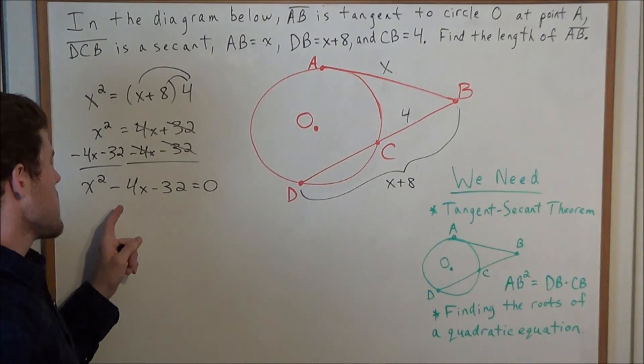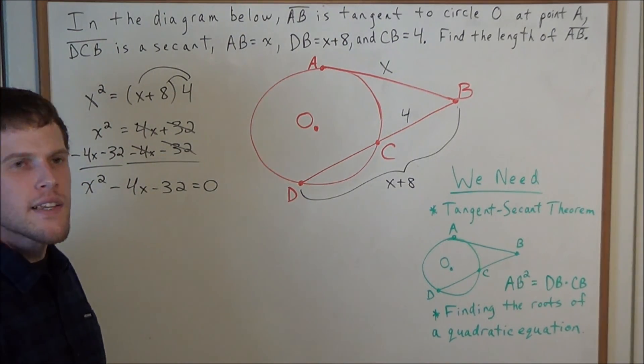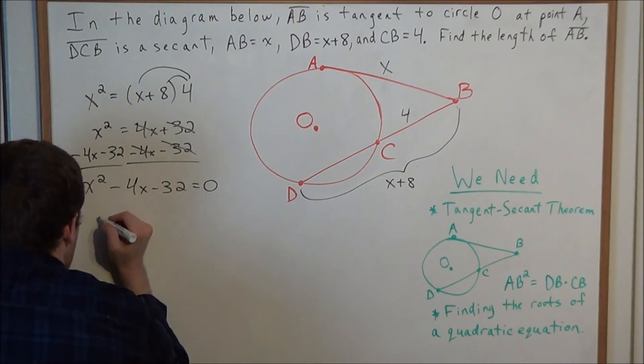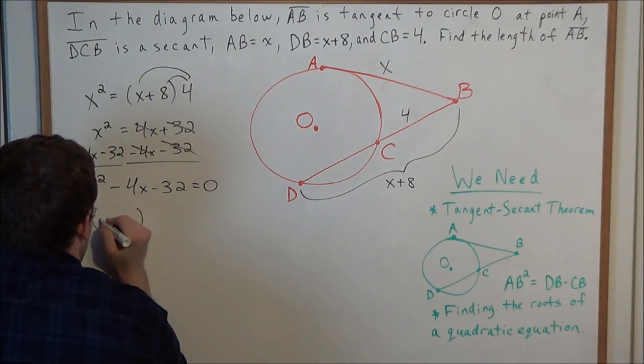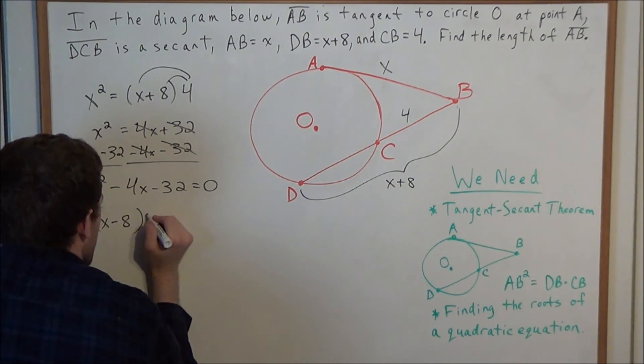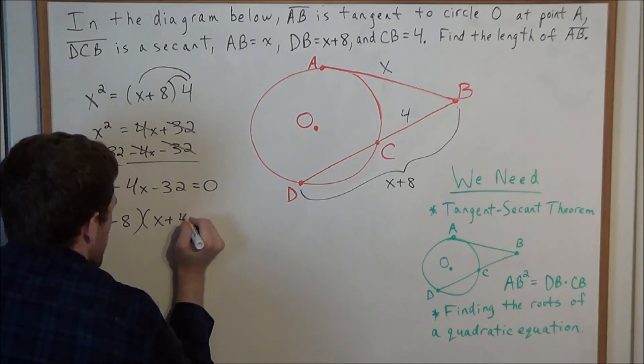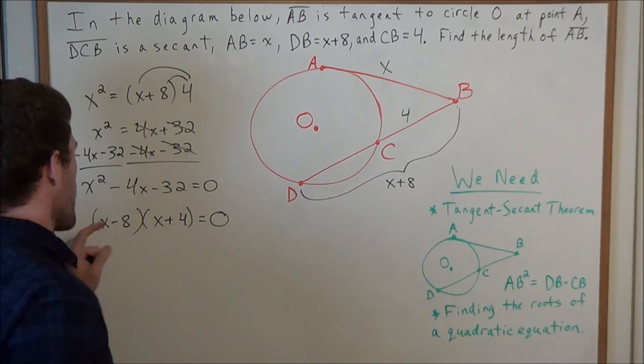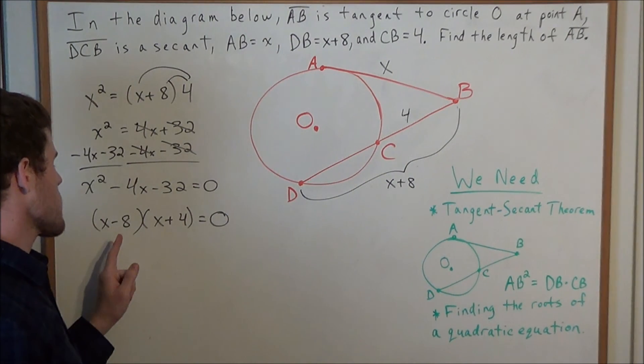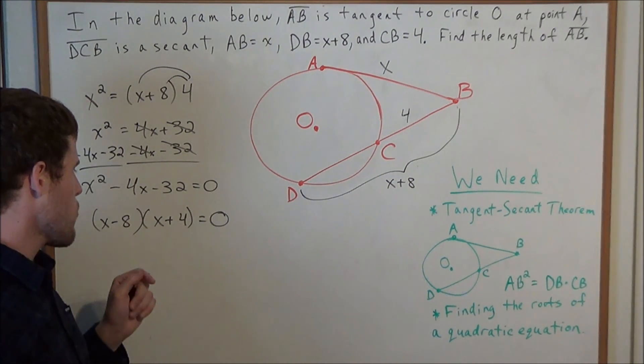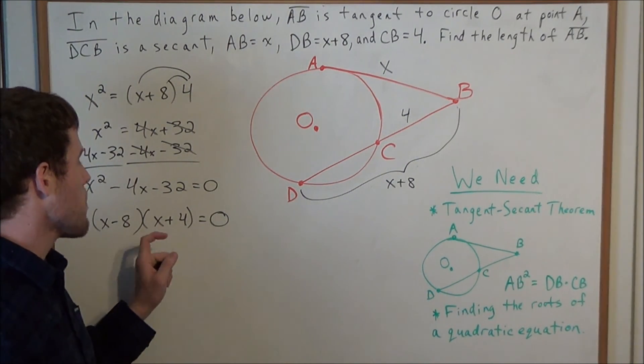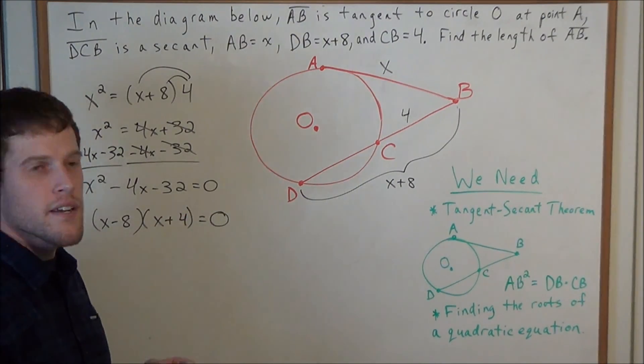So now we need to ask ourselves what two numbers will add to negative 4 and multiply to negative 32. And after a little bit more thought, we'll arrive at X minus 8 times X plus 4. This is how we would factor this quadratic expression. And we can convince ourselves because negative 8 plus 4 is negative 4, negative 8 times positive 4 is equal to a negative 32.